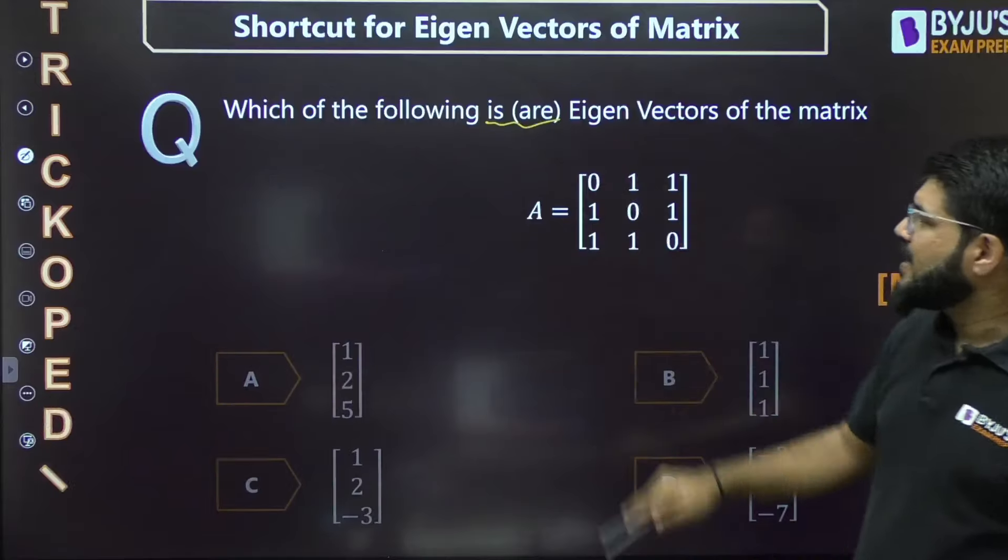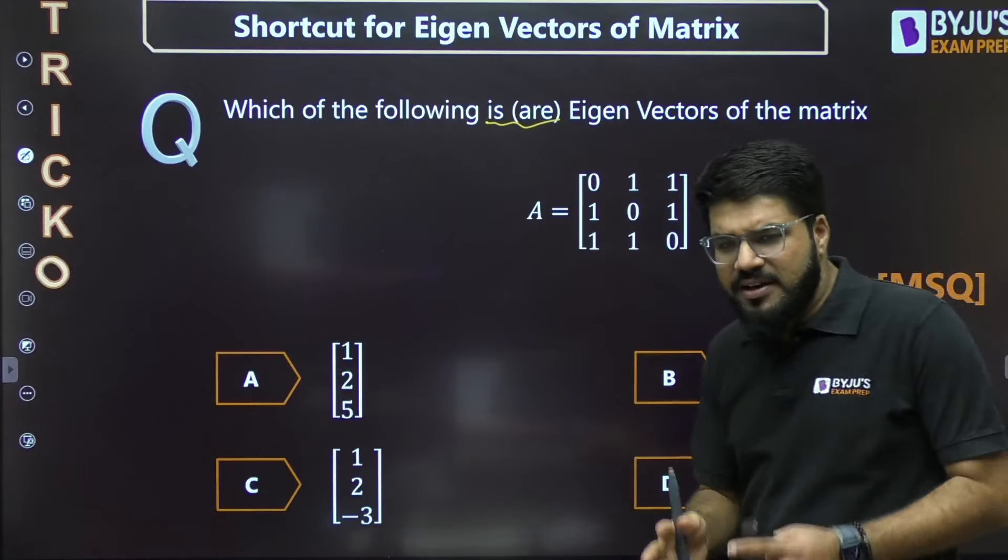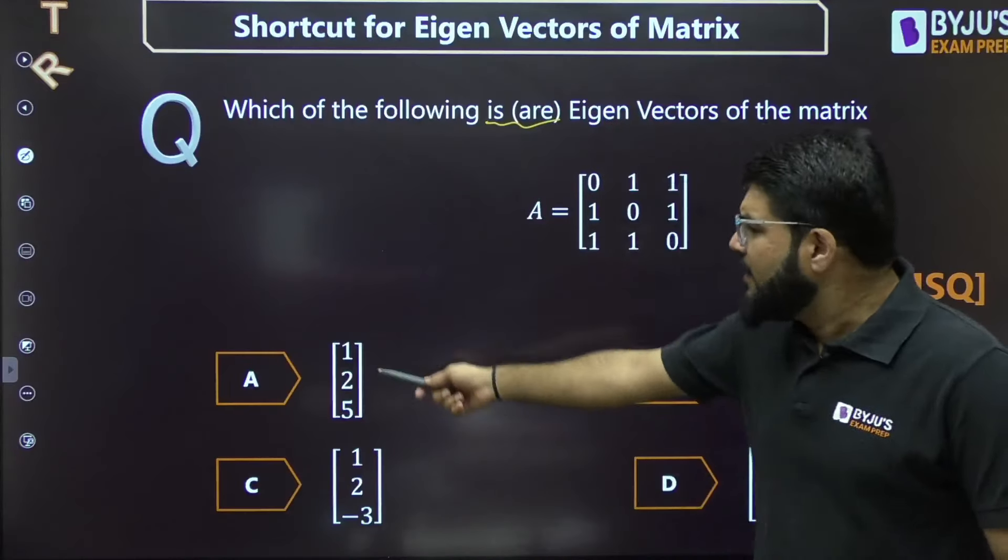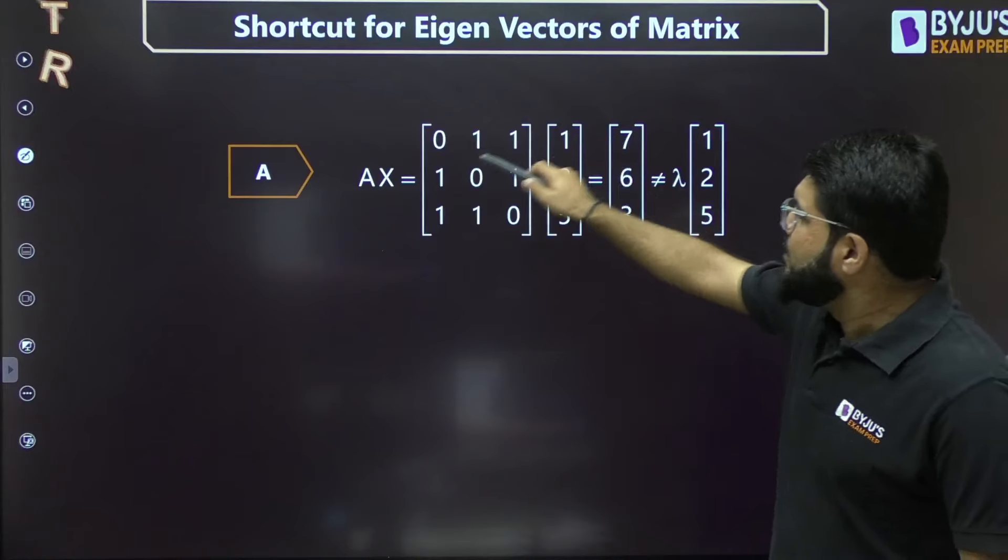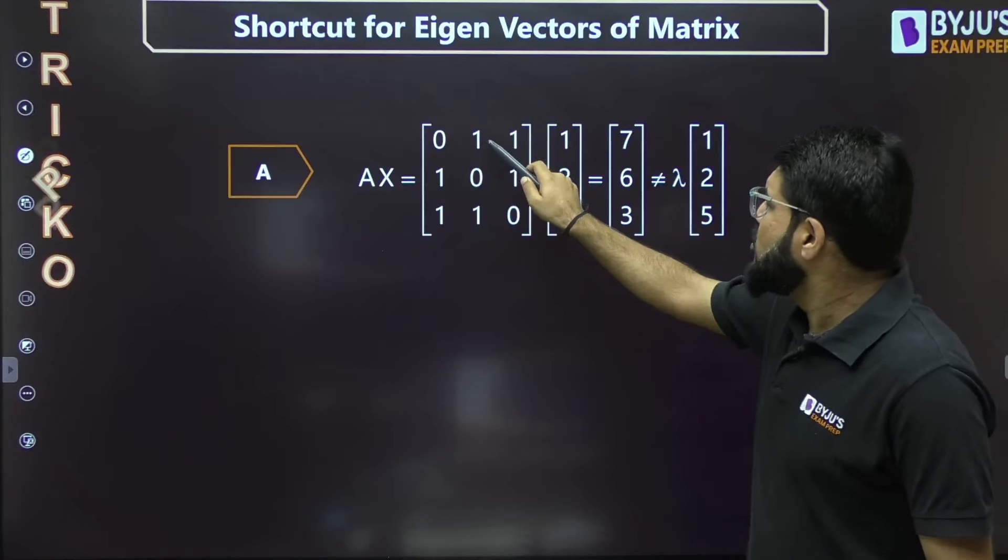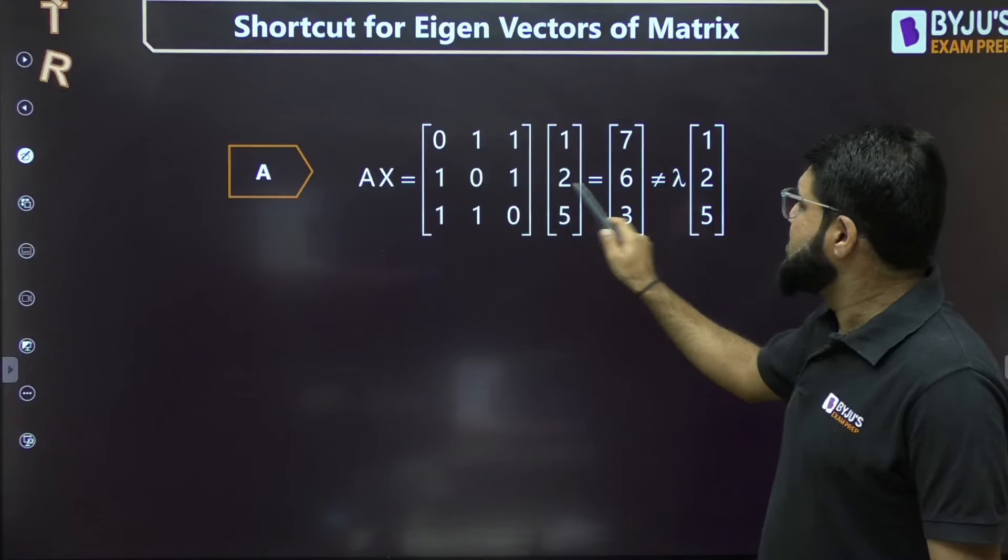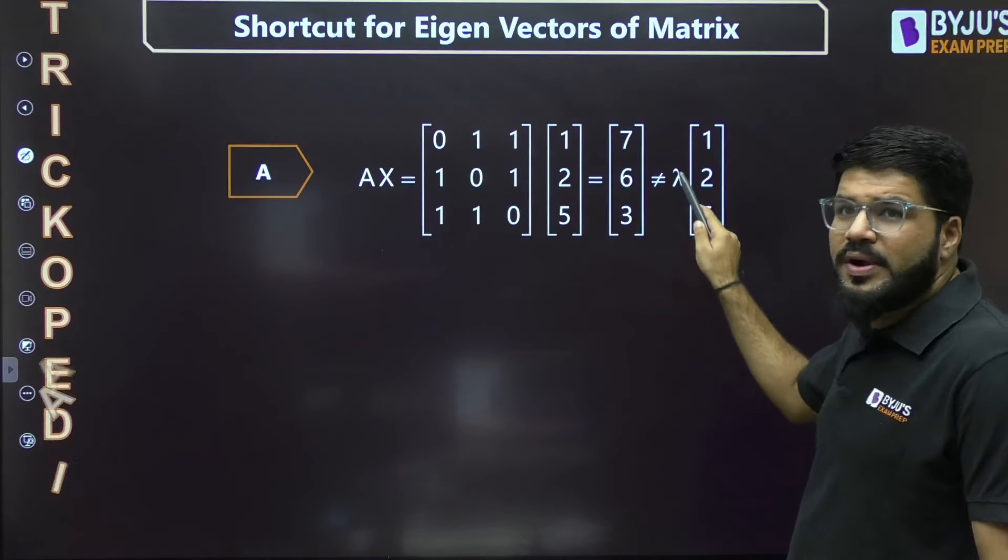Now let's come to the question. It's an MSQ question - what are the eigenvectors? Four options A, B, C, D are given. If x is an eigenvector, it should satisfy Ax = λx. I'll start picking option A: [1, 2, 5]. Multiply by A - first row gives 7, second row gives 6, third row gives 3. Is it equal to λx? No, it's not equal.